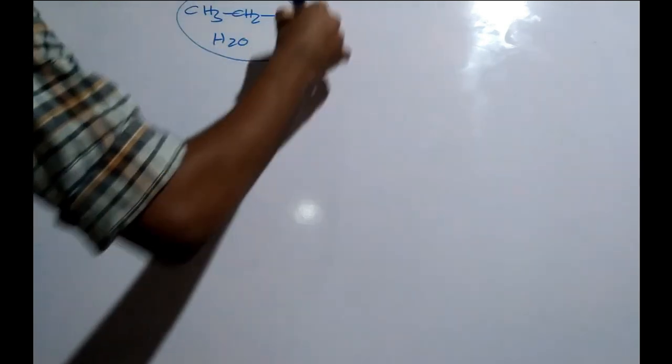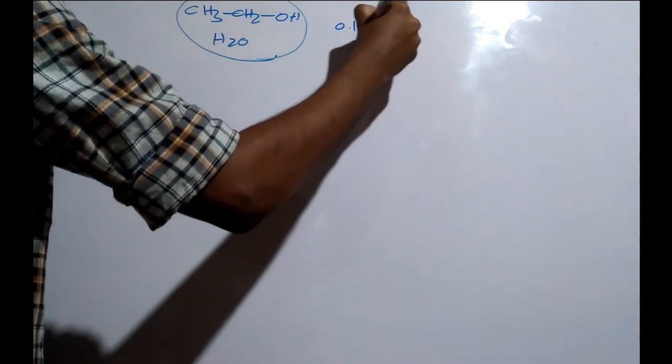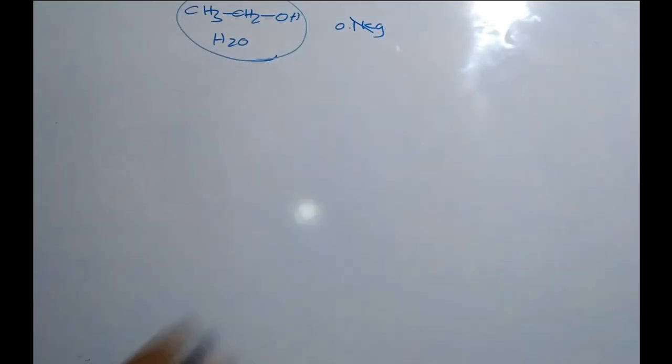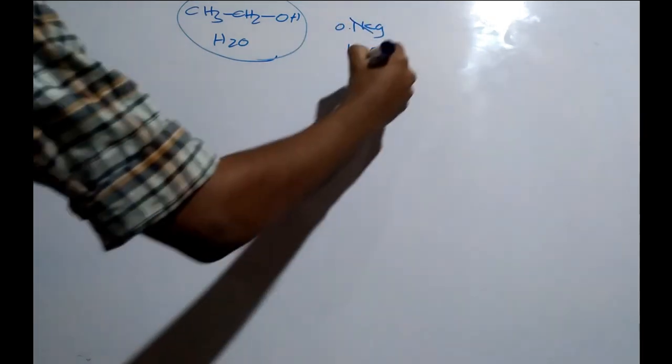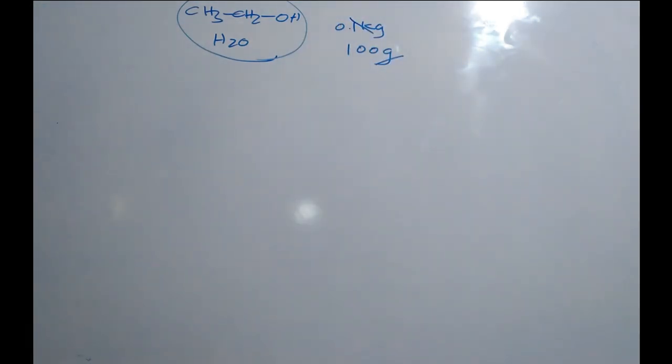So, the first wave of ethanol is 3g to 3g. This is about 5g and 5g. It is about 100g. So, the first wave of ethanol is 3g.